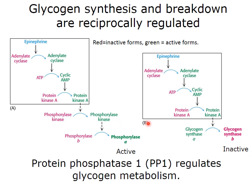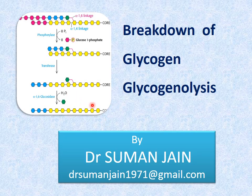So in summary, glycogenesis is inhibited and glycogenolysis is stimulated by epinephrine and glucagon, while insulin has the opposite effect. This concludes the topic of glycogenolysis. You can refer to our past video on glycogen synthesis, and the next video will cover glycogen storage disease.